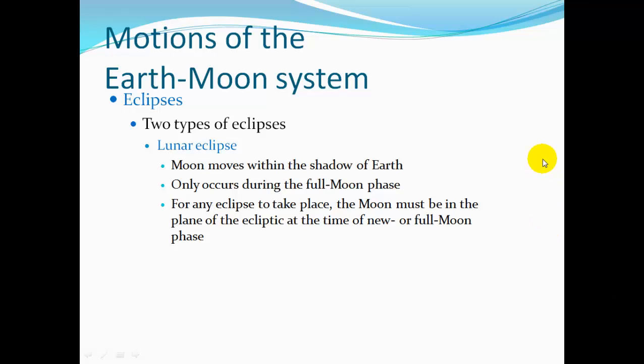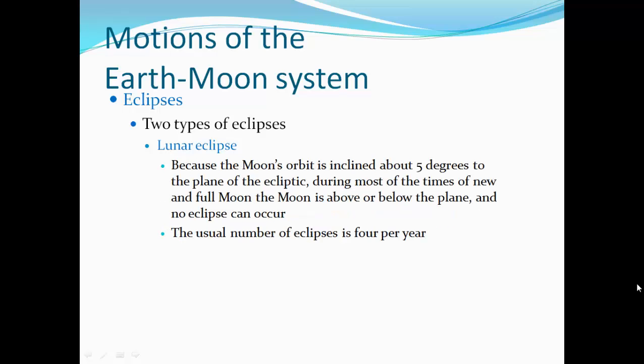In a lunar eclipse, the Moon moves within the shadow of the Earth and only occurs during the full Moon phase. For any eclipse to take place, the Moon must be in the plane of the ecliptic at the time of the new or full Moon. That's the plane that we have with the celestial sphere. Because the Moon's orbit is inclined about five degrees to the plane of the ecliptic, during most of the time, the new and full Moon, the Moon is above or below the plane, so there's no eclipse.